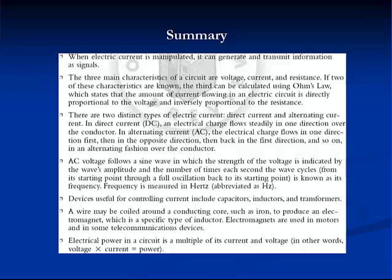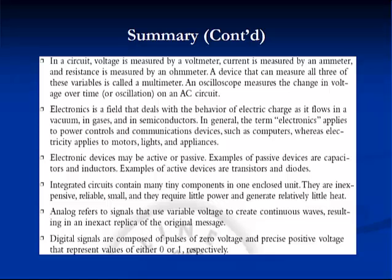Electrical power in a circuit is a product of its current and voltage — in other words, voltage times current equals power. In a circuit, voltage is measured by a voltmeter, current is measured by an ampmeter, and resistance is measured by an ohmmeter. A device that can measure all three variables is called a multimeter. An oscilloscope measures the change in voltage over time on an AC circuit.